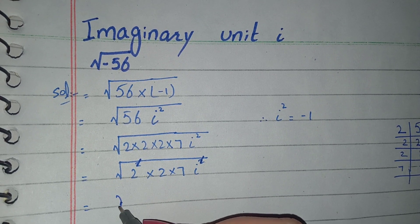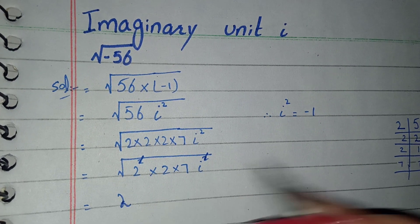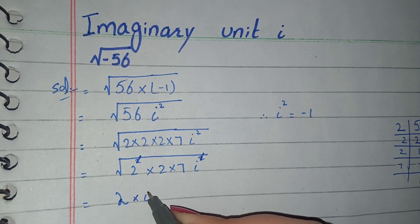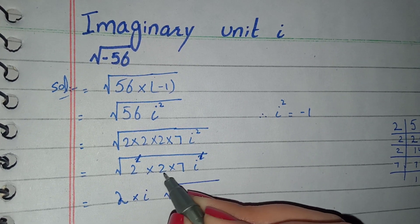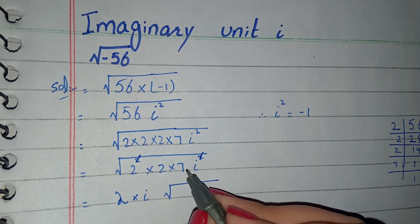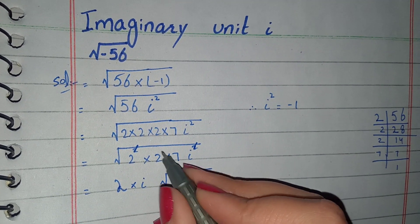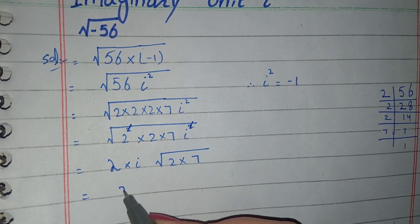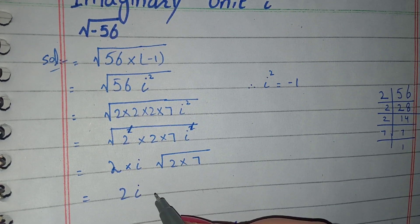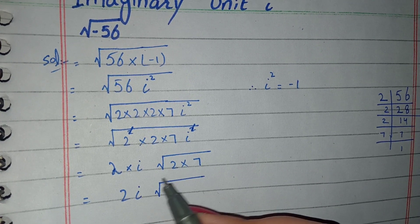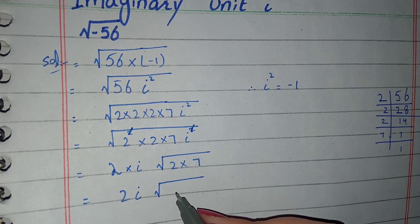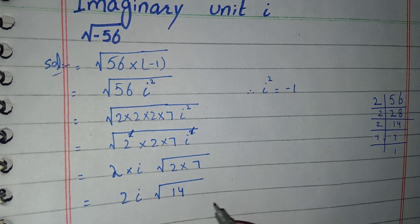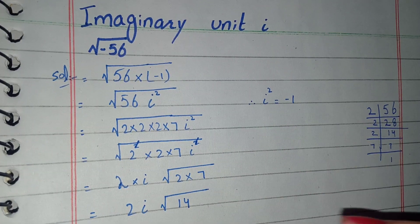The 2 comes outside the square root and iota (i) also comes outside the square root. The remaining 2 × 7 stays inside because there is no pair. Multiplying, we get 2i outside the square root and √14 inside, because 2 × 7 = 14. This is how we solve these types of questions.